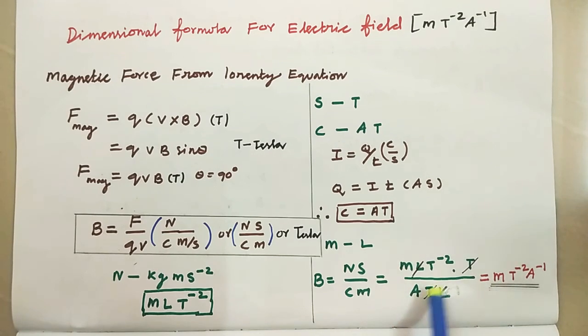L, L cancel, T, T cancel. So, therefore, M, T power minus 2, A power minus 1.